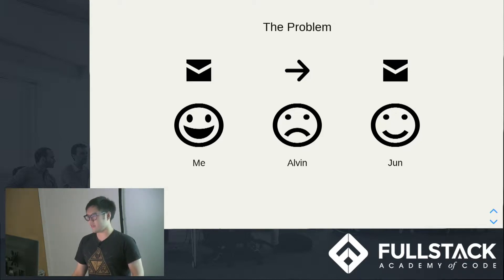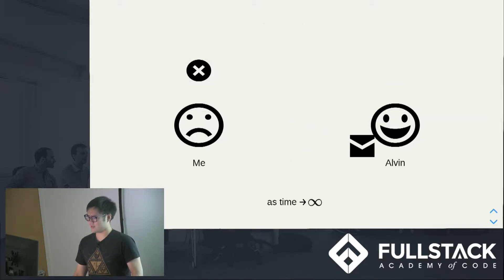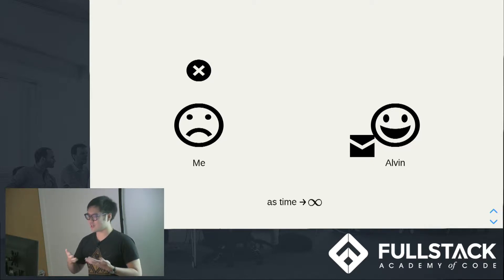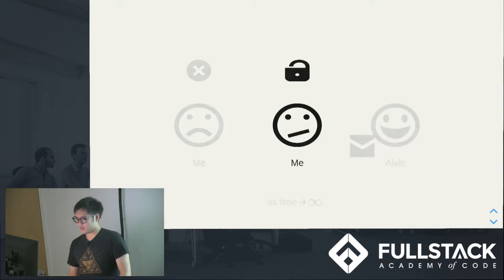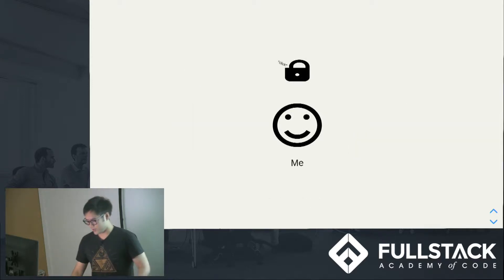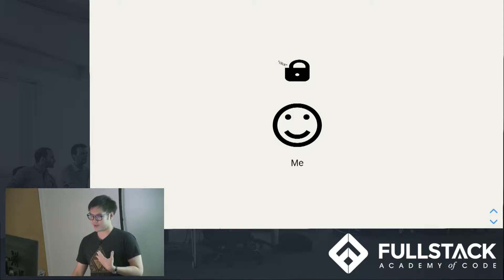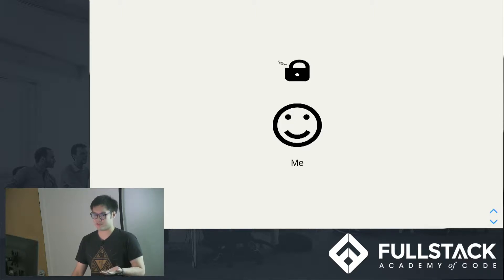It's not that big of a problem — I can just watch the message and make sure he doesn't catch it. But as time goes to infinity, Alvin's really determined. Eventually I'm going to lose track of my letter and he's going to get his hands on it somehow and find out what is in my message. So, being the smart guy I am, why don't I use a secret phrase to scramble my message? It's a system that only I know, so Alvin wouldn't be able to figure out what my message is.